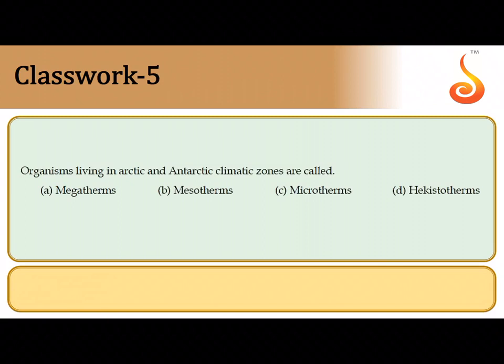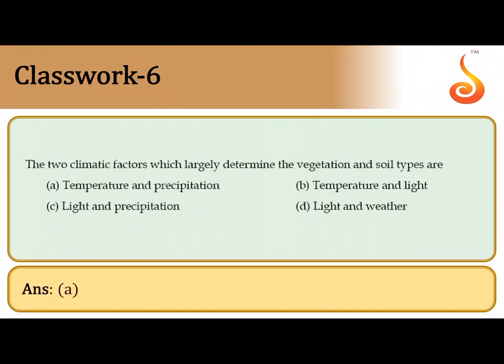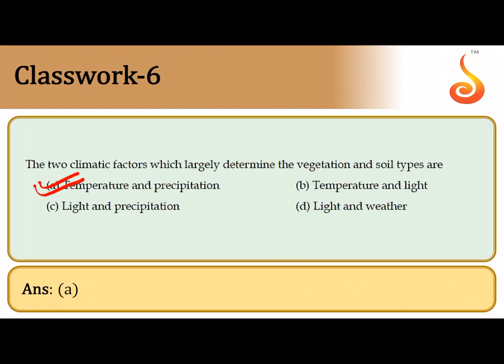The fifth question: organisms living in Arctic and Antarctic climate zones, tolerating extremes of cold, are called hecistotherms. The sixth question: the two climatic factors that largely determine vegetation and soil type are temperature and precipitation. These determine whether the soil is saline or less saline, acidic or alkaline, and how the temperature is maintained — what kind of plants grow in that environment.